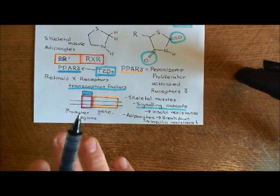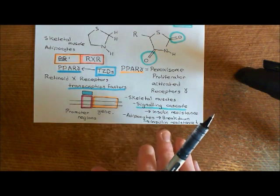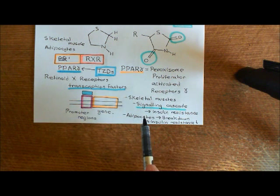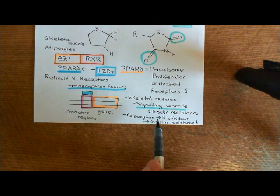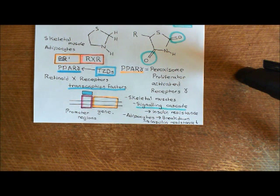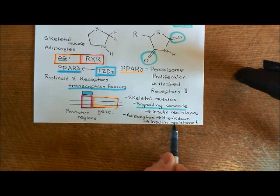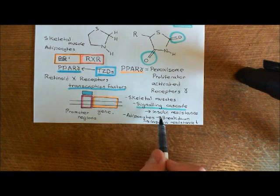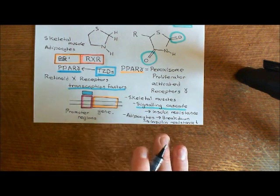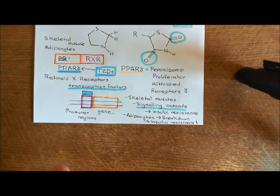So basically, these thiazolidinediones work to remove insulin resistance in two ways: firstly, directly by actually stimulating insulin sensitivity in the skeletal muscle cells, and also indirectly by stopping the cause of the insulin resistance in the first place — which is the too high free fatty acid level within the bloodstream being released by adipocytes. The thing that people don't like about these drugs is that because it promotes the storage of fat in the adipocytes, they generally cause weight gain. But you can argue that that's acceptable from a type 2 diabetes perspective, because fat stored in the adipocytes is safer than it being in the blood and being stored in hepatocytes and skeletal muscle cells instead.